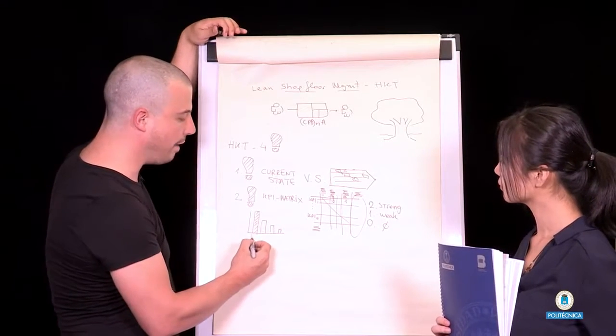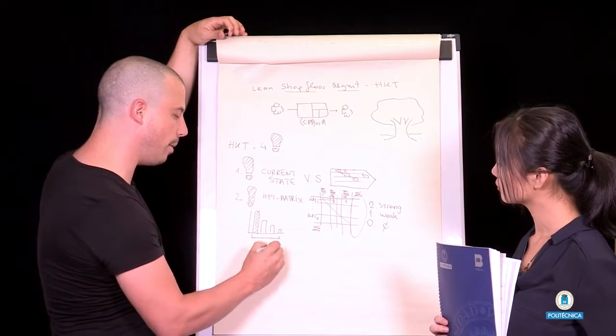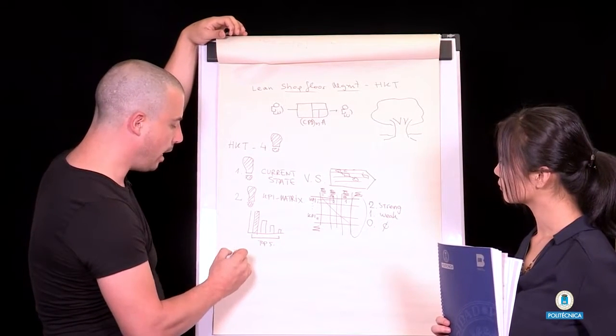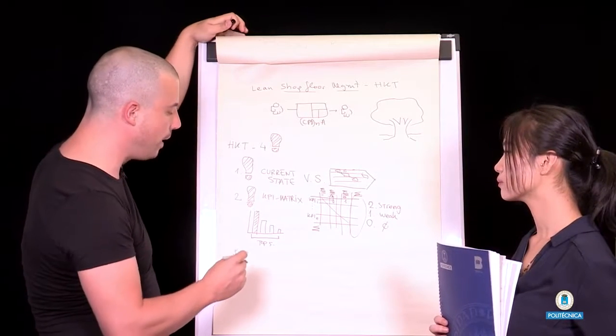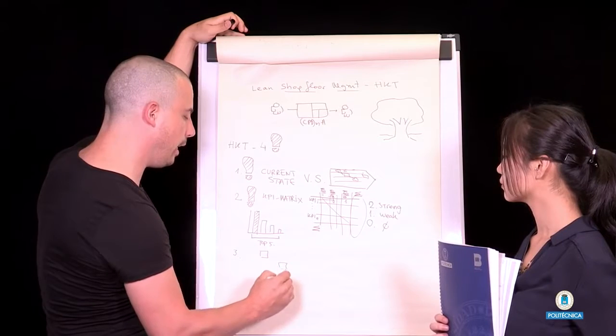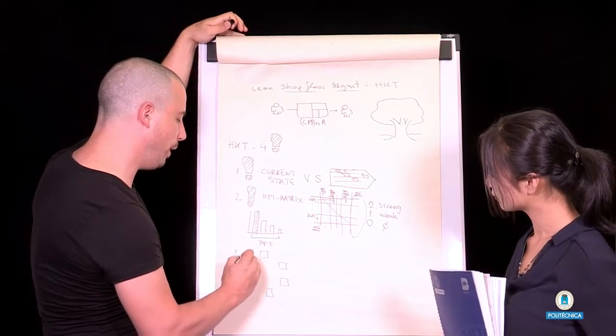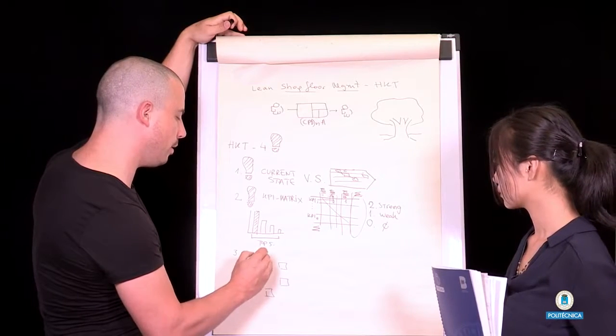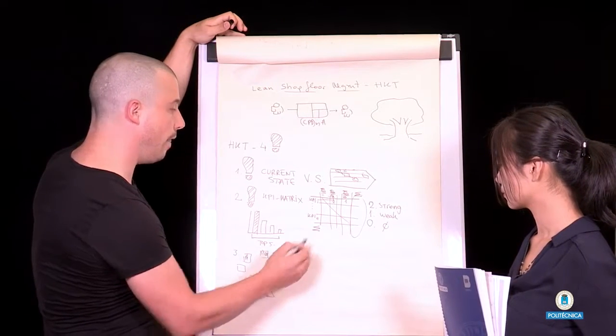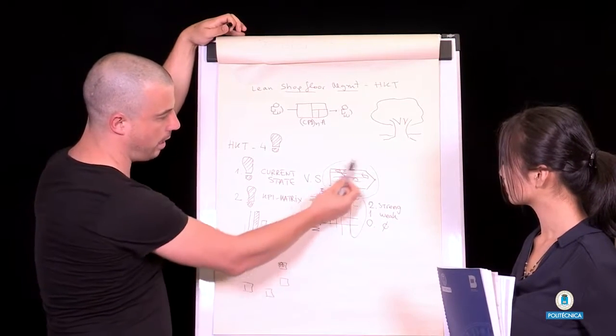So when we have a list of the most important KPIs, like let's say the top 5 KPIs or the top 10 KPIs, whatever, we go and we create what we call a hierarchy-less network in which we list all the process owners that happen to have an impact on this value stream.